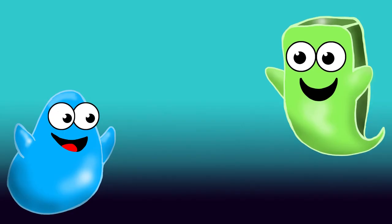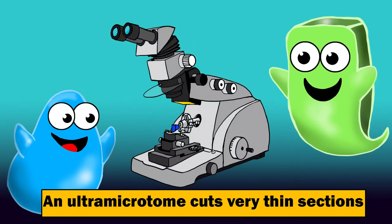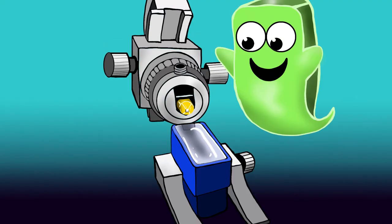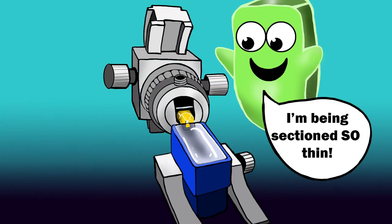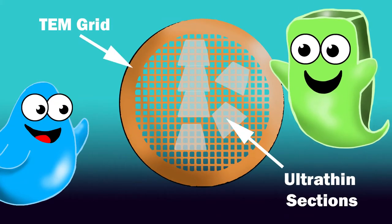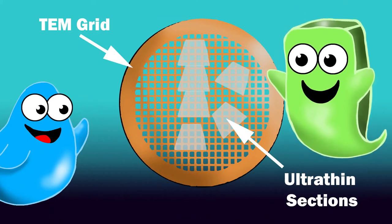To be imaged in the TEM, samples have to be really thin, like less than 100 nanometers in thickness. To cut these really thin sections, we use an instrument called an ultra-microtome. Then we put them on special metal discs called TEM grids. Now they're ready to image.